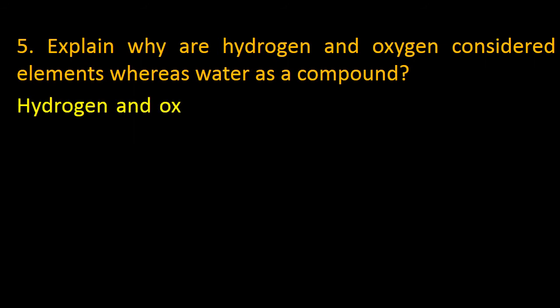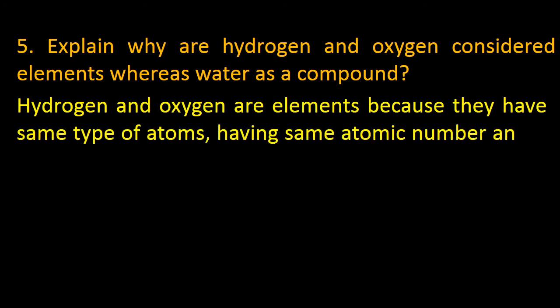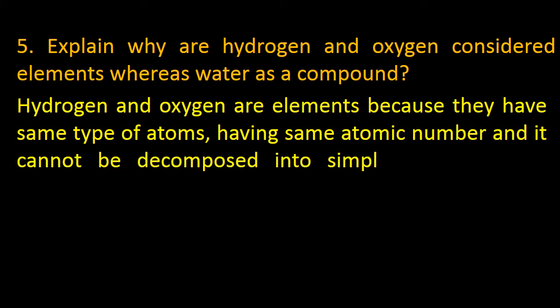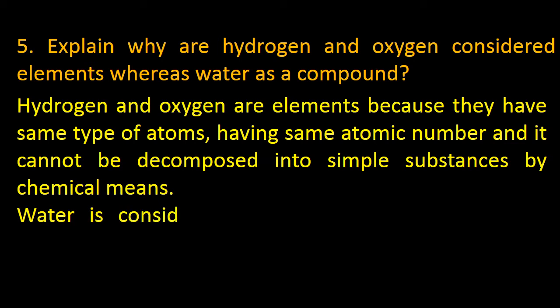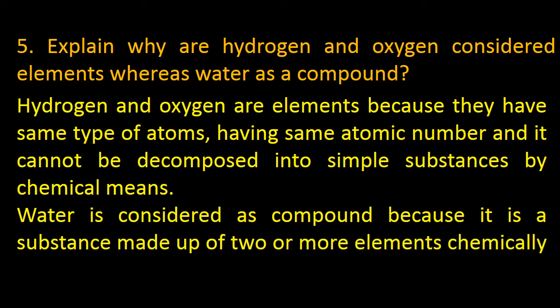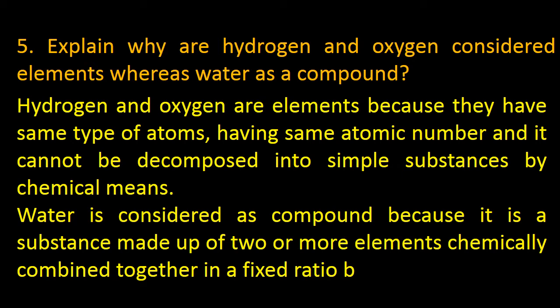Question number five: Explain why hydrogen and oxygen are considered elements whereas water is a compound. Hydrogen and oxygen are elements because they have same type of atoms, having same atomic number and it cannot be decomposed into simple substances. But if I talk about water, water is considered as a compound because it is formed by the fixed ratio of elements by their mass. So it is a substance made up of two or more elements chemically combined together in a fixed ratio by mass. As we know that water is made up of two hydrogens and one oxygen, so it's a fixed ratio.